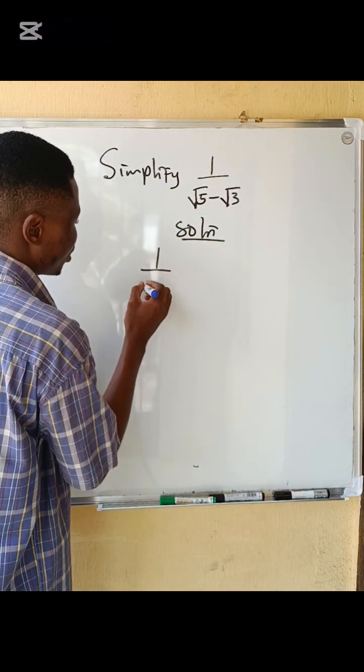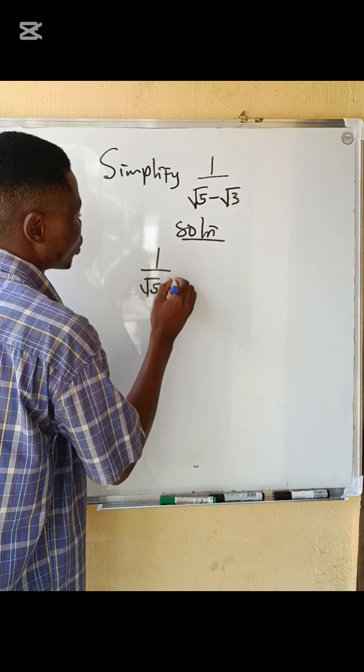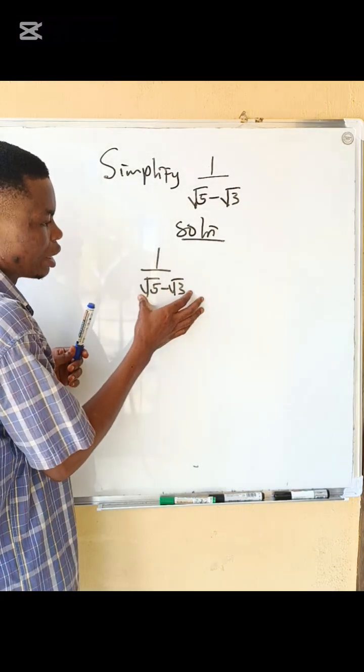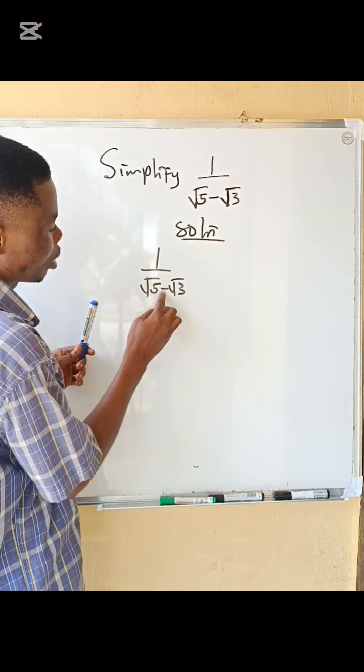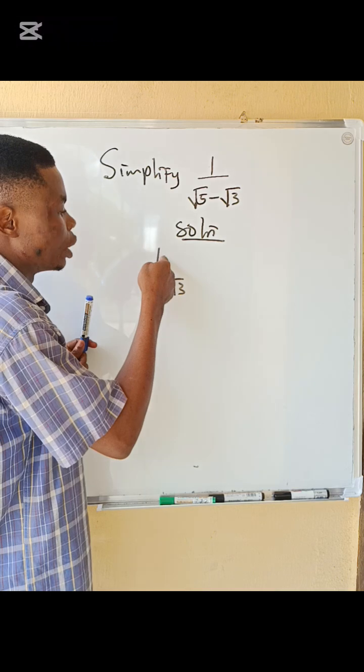I bring down the equation: 1 over square root of 5 minus square root of 3. We are going to find the conjugate. Conjugate means you change the middle sign from minus to positive and multiply with both the numerator and the denominator.